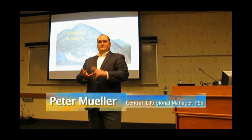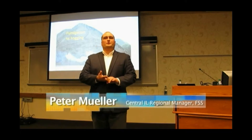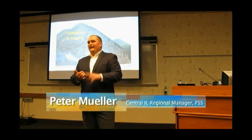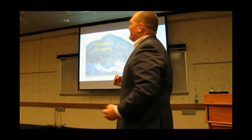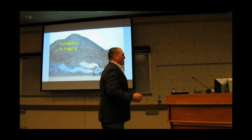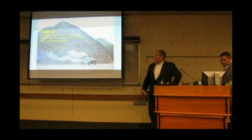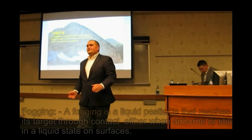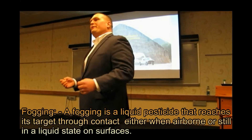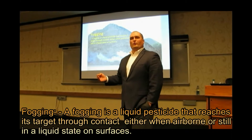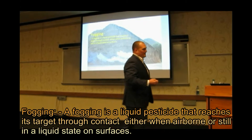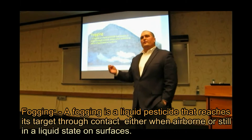By definition, fumigation is a certain concentration for a certain period of time at a certain temperature. That kind of says we have to do some sealing to hold that concentration. I commonly get questions about the difference between fumigation and fogging. A fogging by definition is a liquid pesticide, usually measured in microns, that reaches the target pest as a liquid or a vapor.